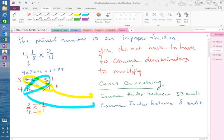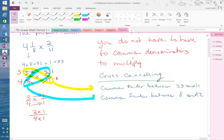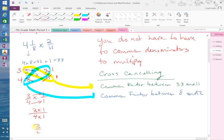Now, I just multiply it out. 3 times 1 on top. 4 times 1 on bottom. Which is equal to 3 fourths.